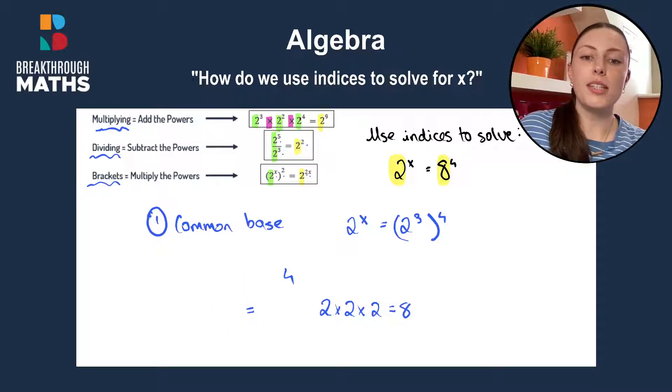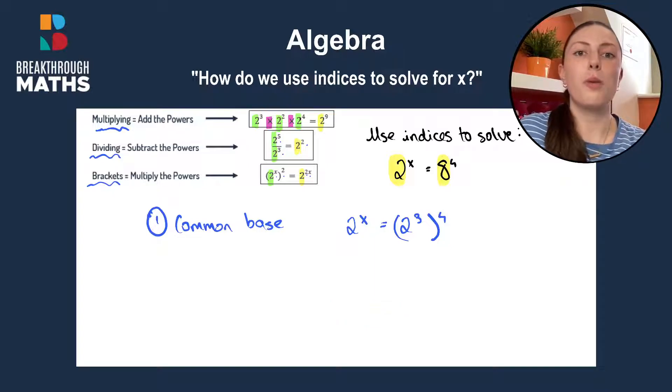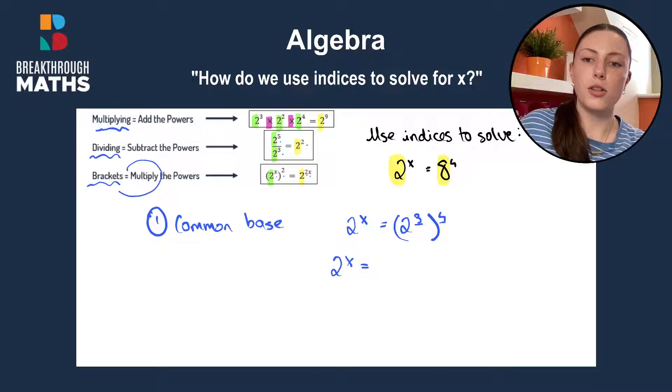So we know we needed 2 as our common base, so we brought it down to 2. We worked our way up. 2 by 2 was 4, 2 by 2 by 2 gives us 8. Then we have another rule. We have brackets here, and we know with brackets, we multiply the powers. So 3 by 4 is 12, keeping our common base the same.